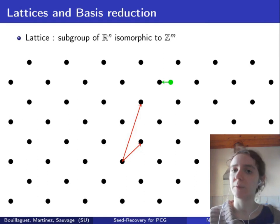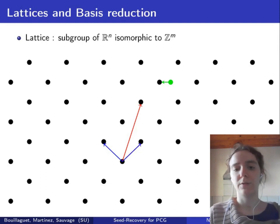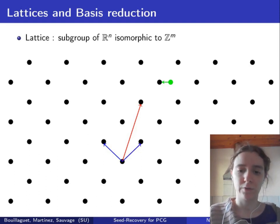So before using the Babai rounding algorithm, we need to reduce the basis of the lattice. For example, to obtain the blue basis here, which is shorter. And to reduce the basis, we're going to use the LLL algorithm, which is polynomial in the dimension of the lattice.